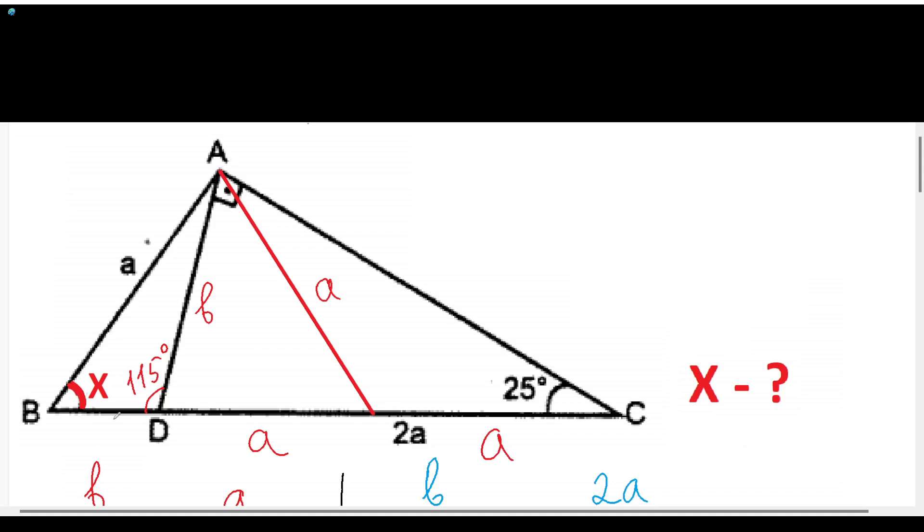And this will also be A. So if we will see the triangle ABF, we can see that it is an isosceles triangle and this angle will be also X. Here we know that from the triangle AFC, this angle will be 25 degrees because this is also an isosceles triangle. And we know that X will be equal to 25 degrees plus 25 degrees, and it will be 50 degrees.